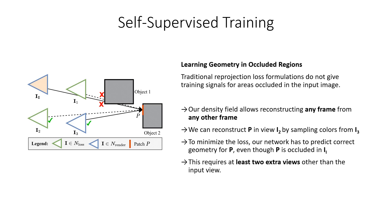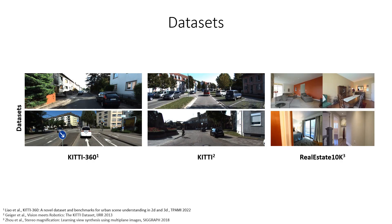Note that in order to learn geometry about occluded areas, we require at least two additional views besides the input image during training. Through our proposed architecture and our novel training scheme, we can train our method on challenging datasets like KITTI 360, KITTI and RealEstate10K.